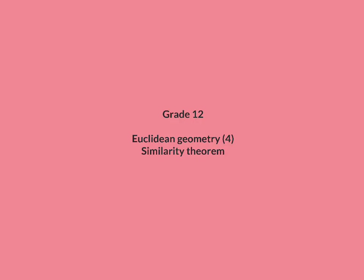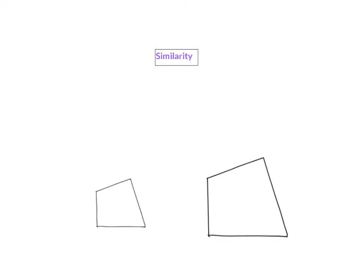In this lesson on Grade 12 Euclidean Geometry, we are going to have a look at the similarity theorem. If two figures are similar, it indicates two things.